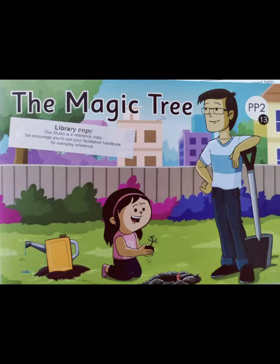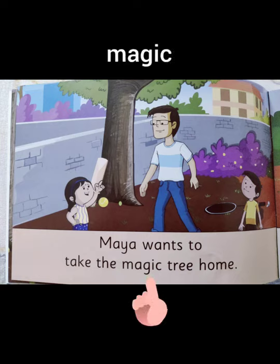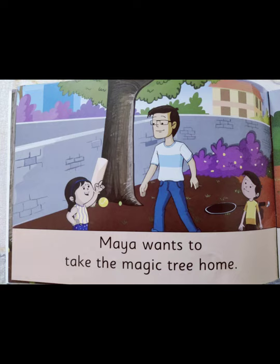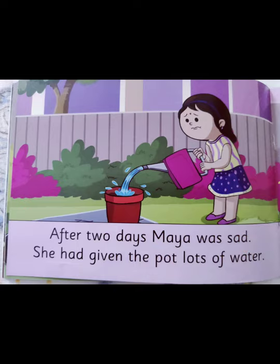Our first word is Magic. Where is the word magic? Here. What sentence can we make with the word magic? Maya wants to take the magic tree home. Our next word is Water. She had given the pot lots of water.